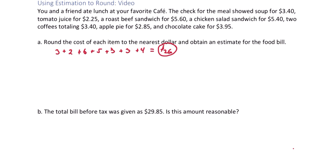Now part B — the total bill before tax was given as 29.85. Do you think that this is a reasonable amount given that our estimate is 26 dollars? While these are pretty close, it seems like 29.85 is a little much given that our estimate is only 26 dollars.